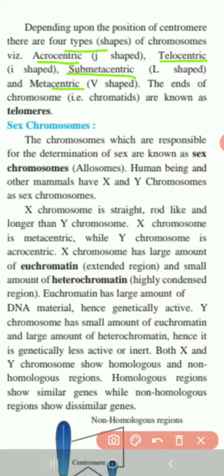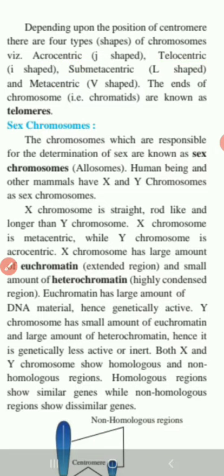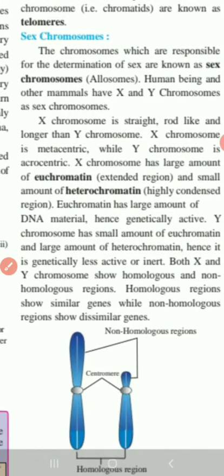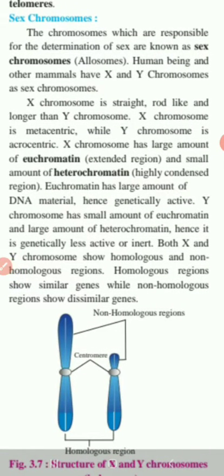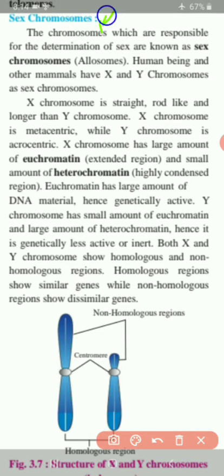These are the four different types of chromosome due to the position of centromere, and now we are going to discuss about sex chromosomes, also known as allosomes.